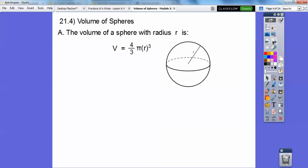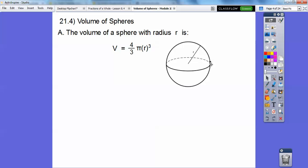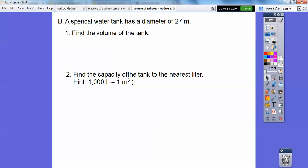Okay, so volume of spheres. The volume of a sphere that has radius r, so I don't know if you can see that little r right there, but this radius right here is r, so is this radius, so is this radius, so is this radius. The radius is whatever r is, but there's our formula: 4 thirds pi r cubed.